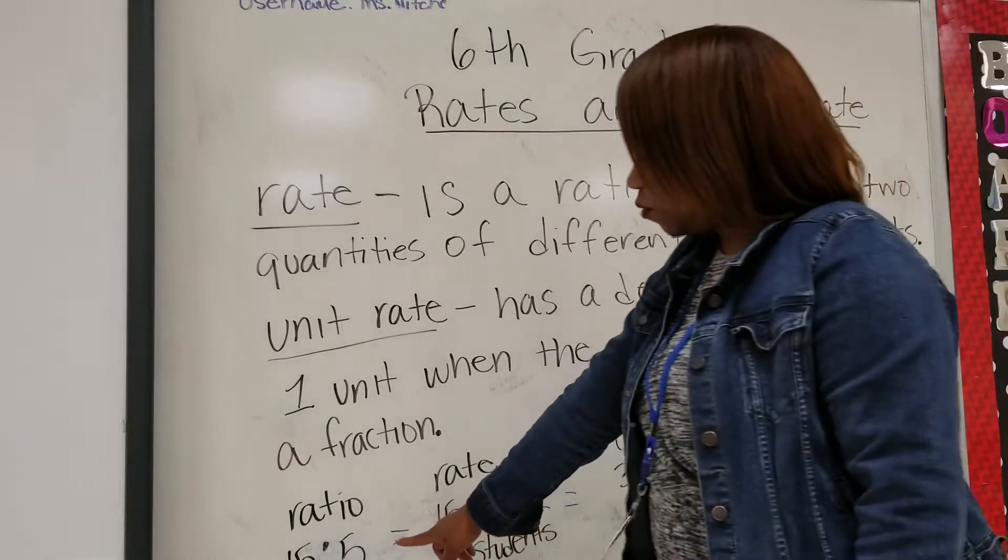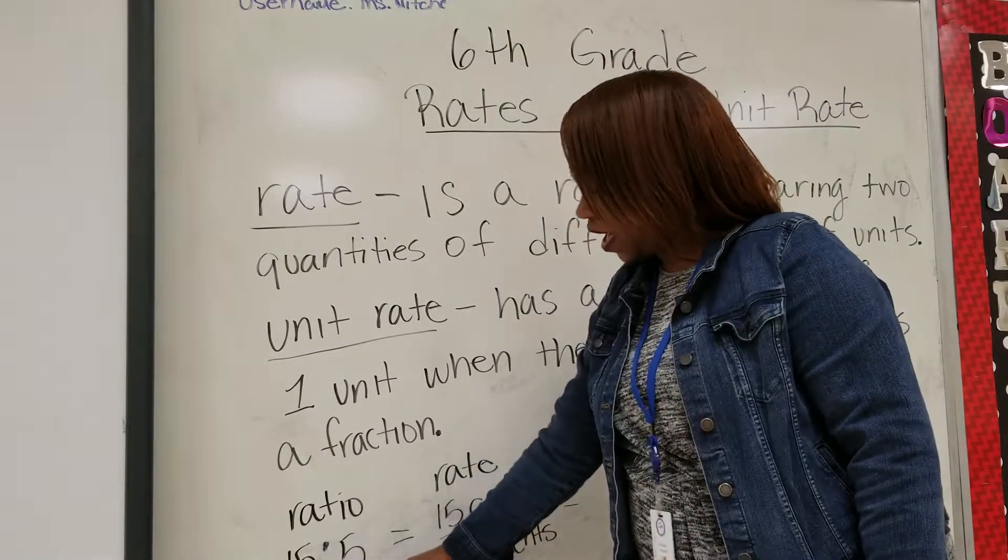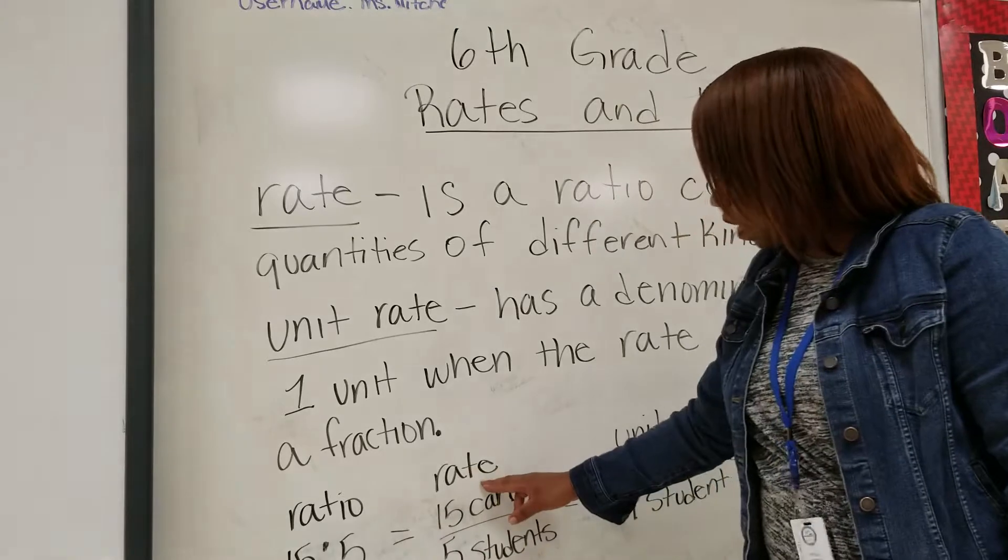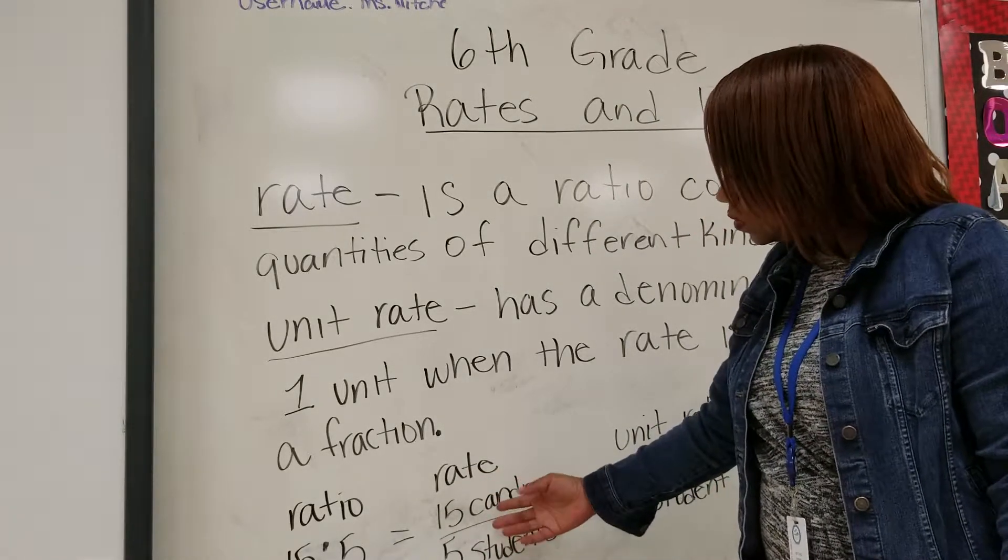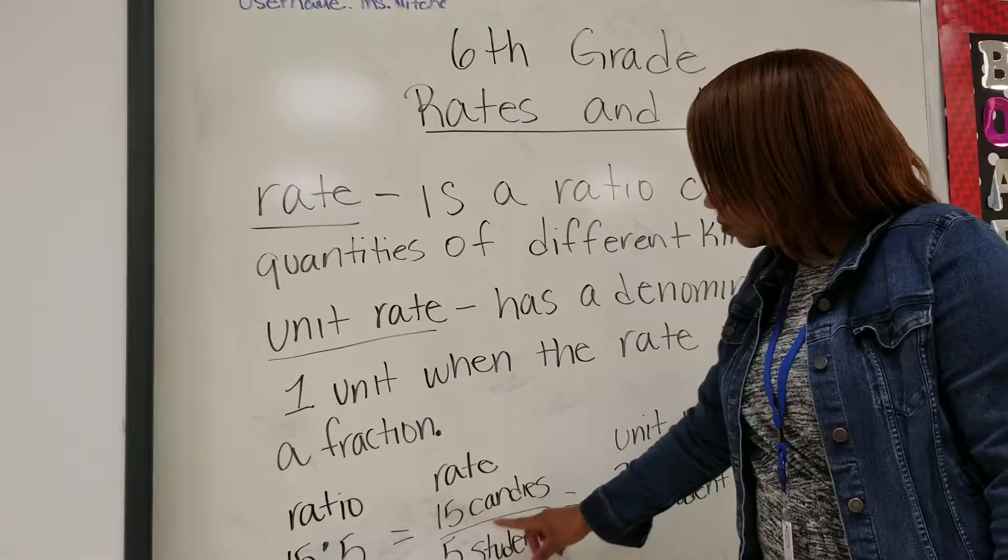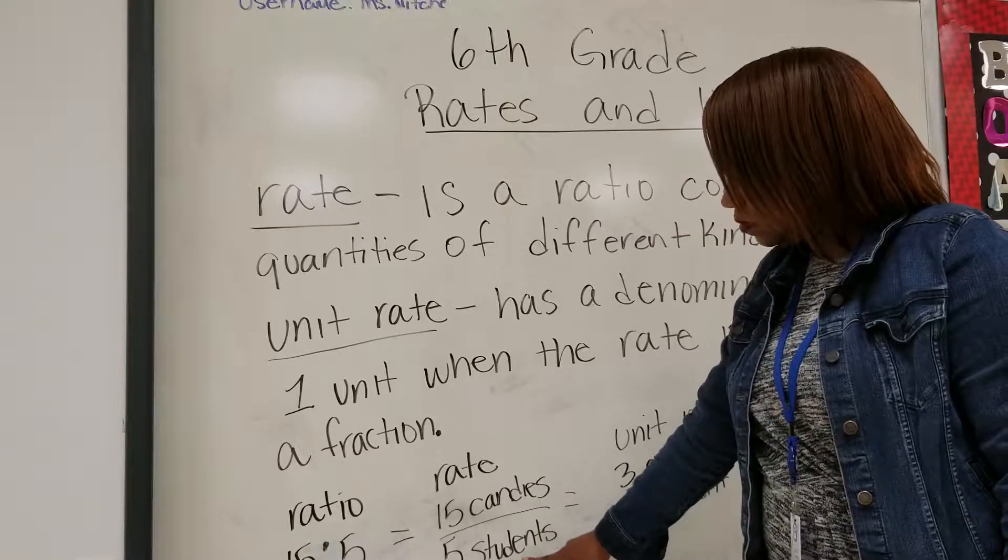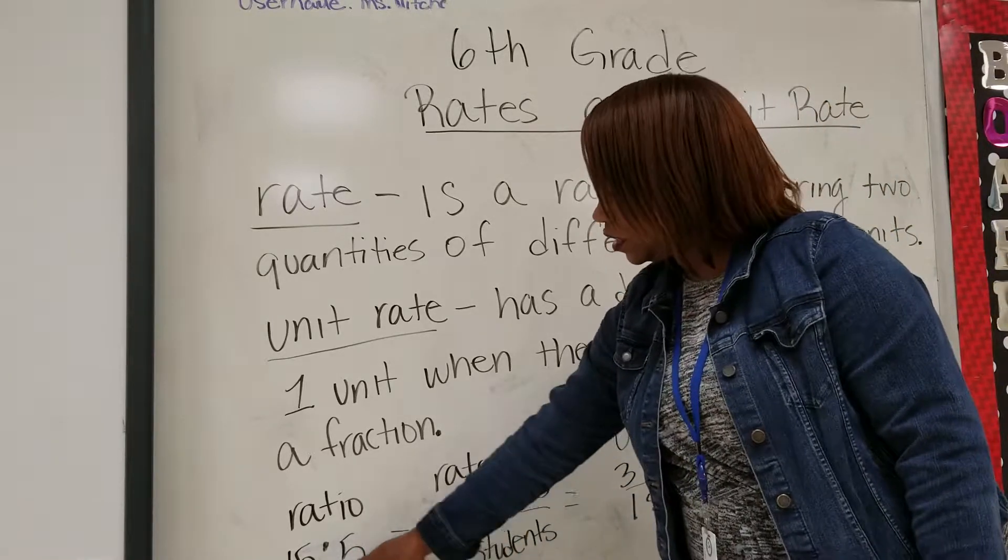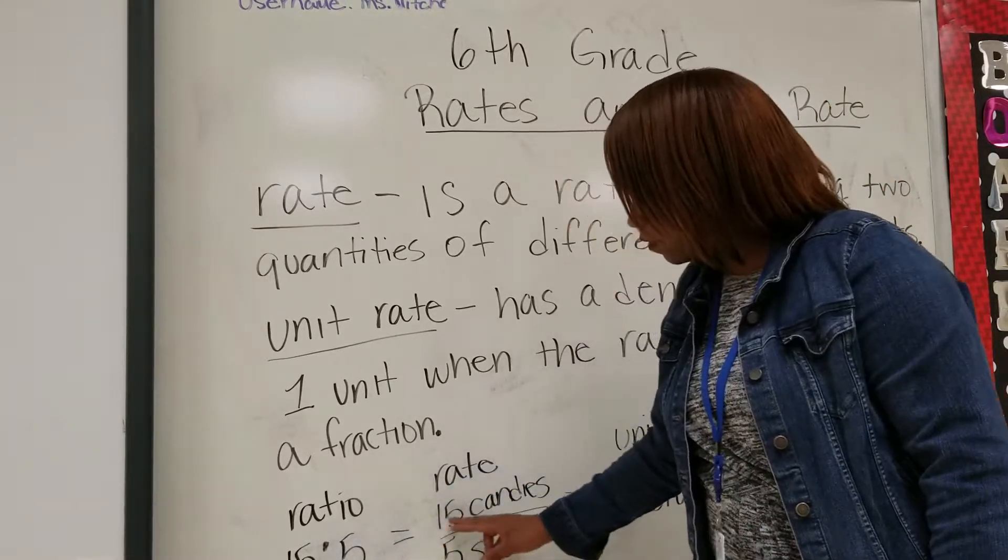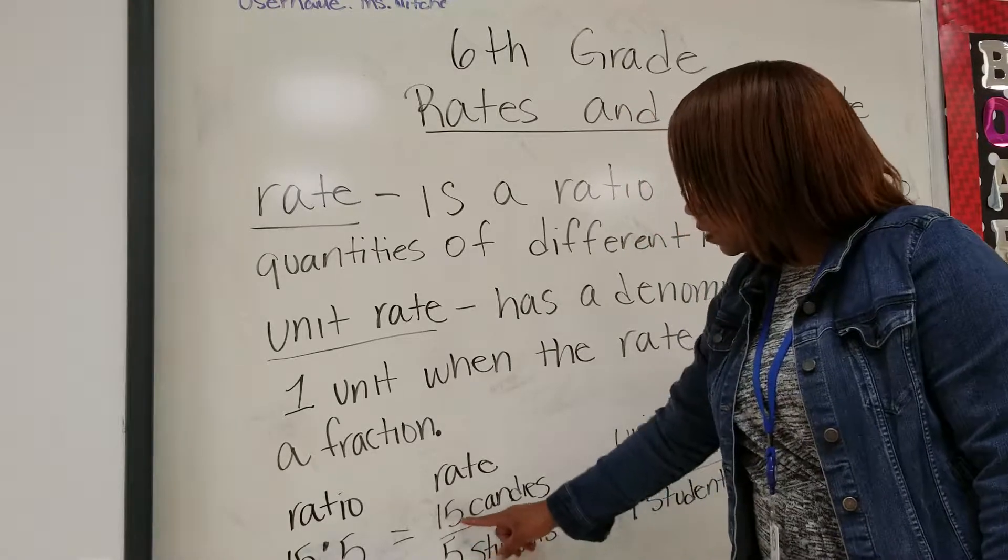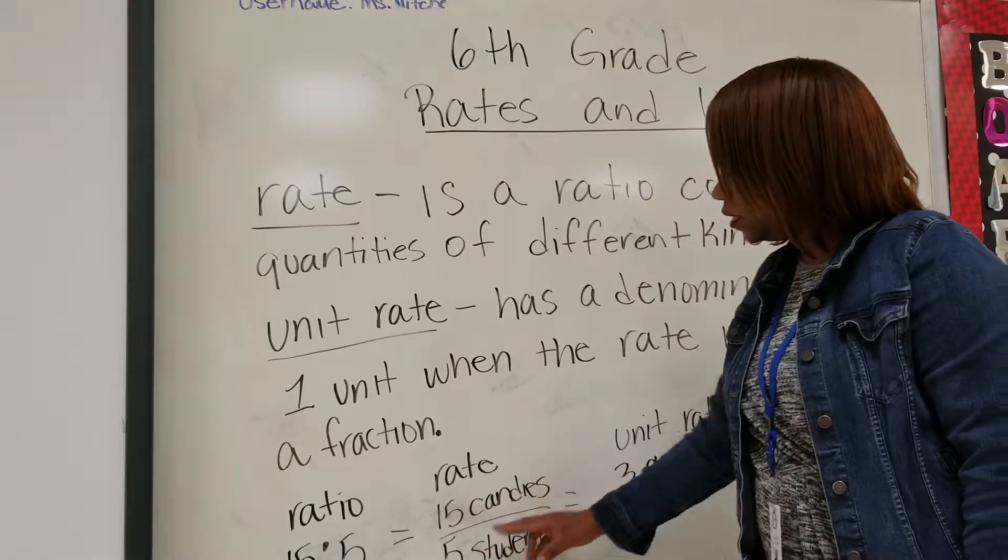Here we have a ratio 15 to 5. As a rate, we can use 15 candies to 5 students, and you see we're still keeping the same ratio 15 to 5. So in here we're using 15 candies to 5 students.